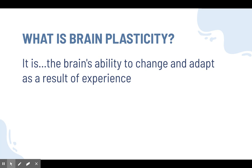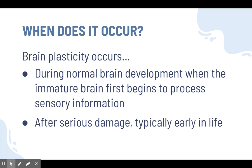Brain plasticity is something that not all parts of the body can do. It occurs mostly in two instances. First, it happens during normal brain development — our brain grows and matures over time and certain parts change and adapt. This happens especially when the immature brain first begins to process sensory information, as we're infants and young children going through so much development. That's why it's important to make sure children are getting a lot of opportunities to learn and that development is happening in a good way, because our brain isn't as adaptable as we get older.